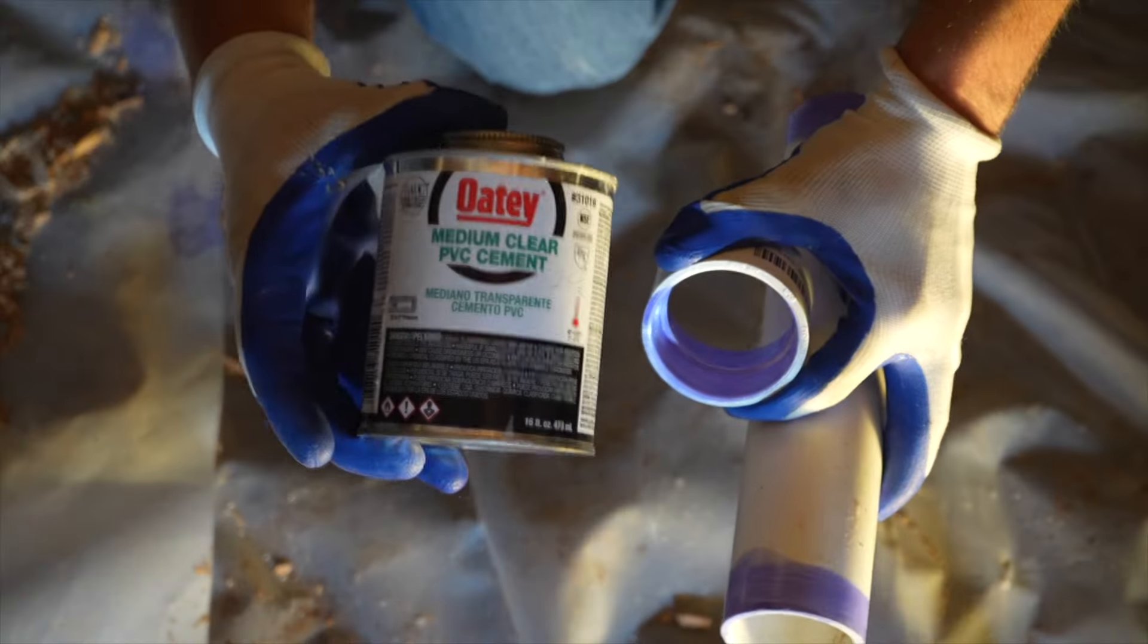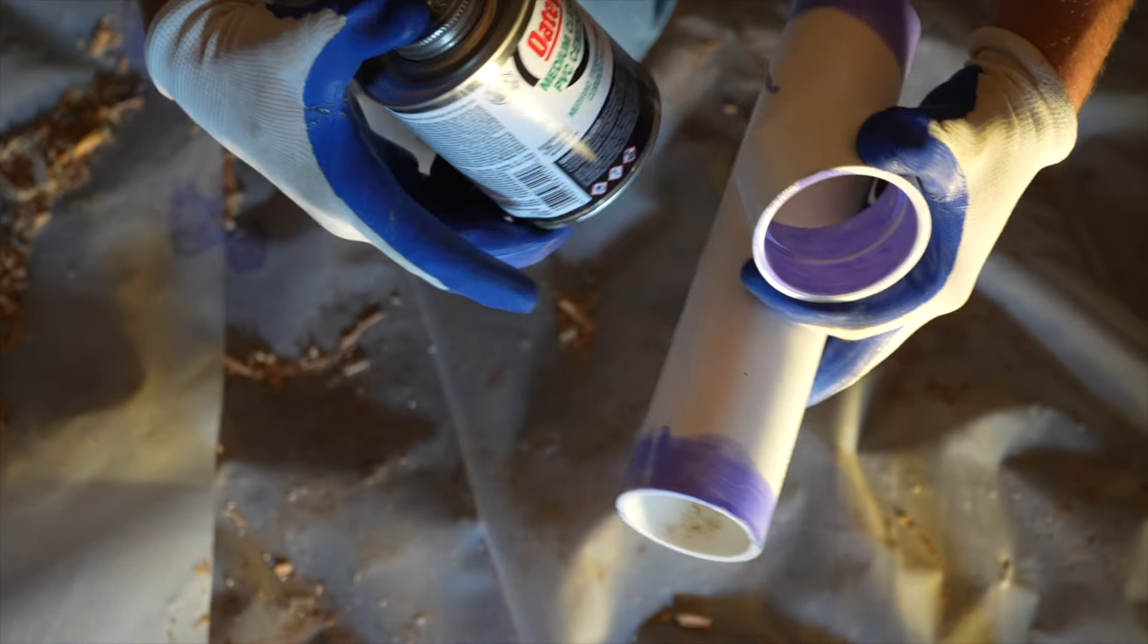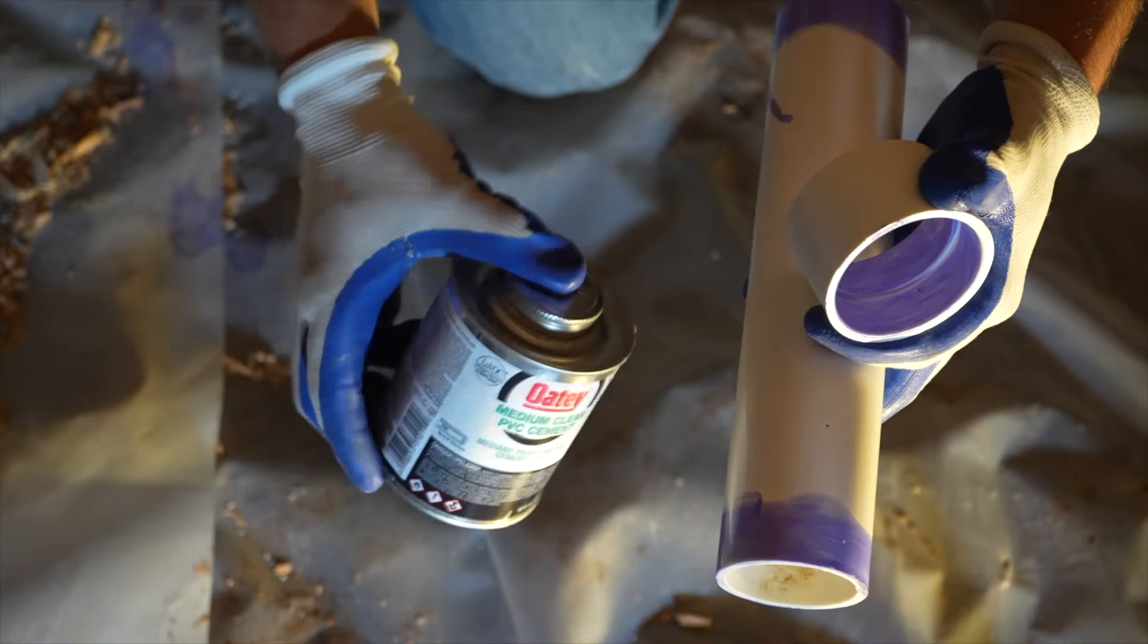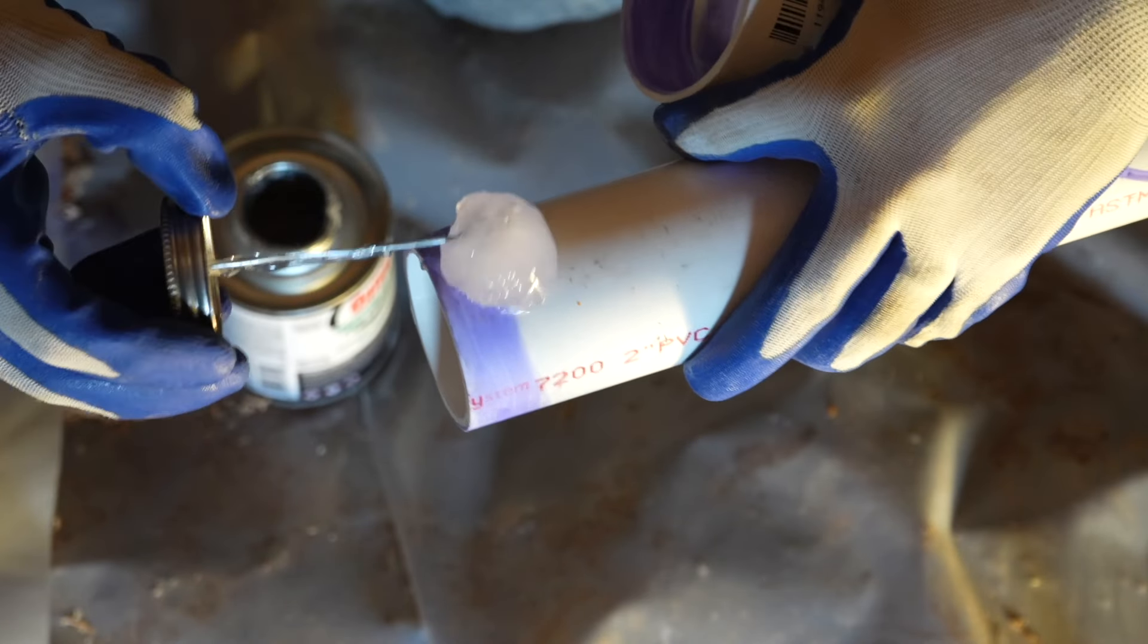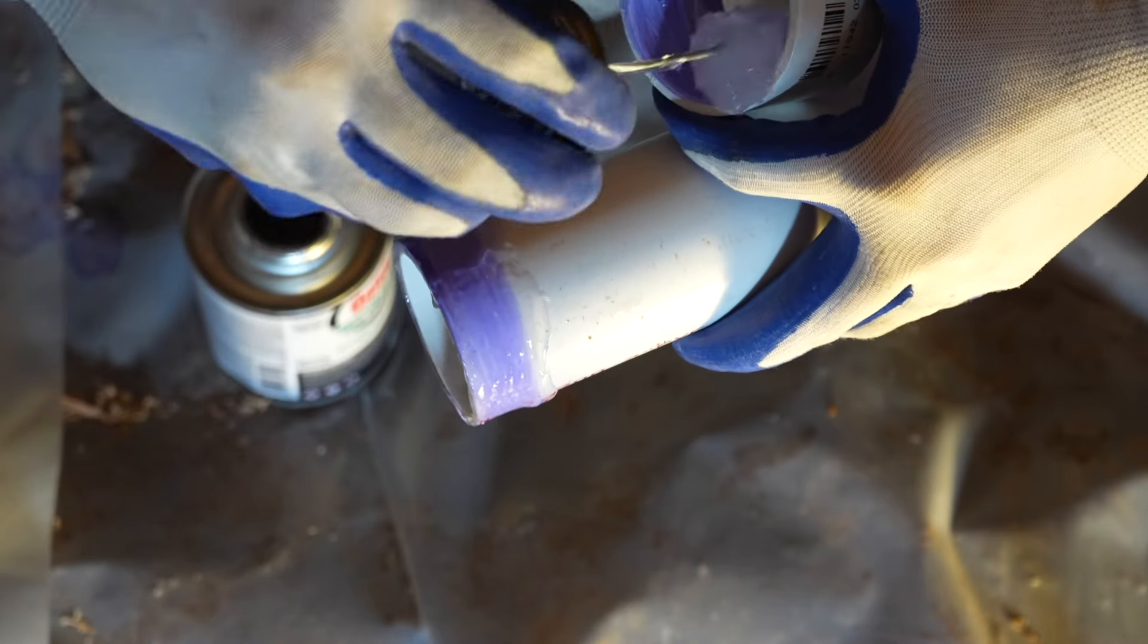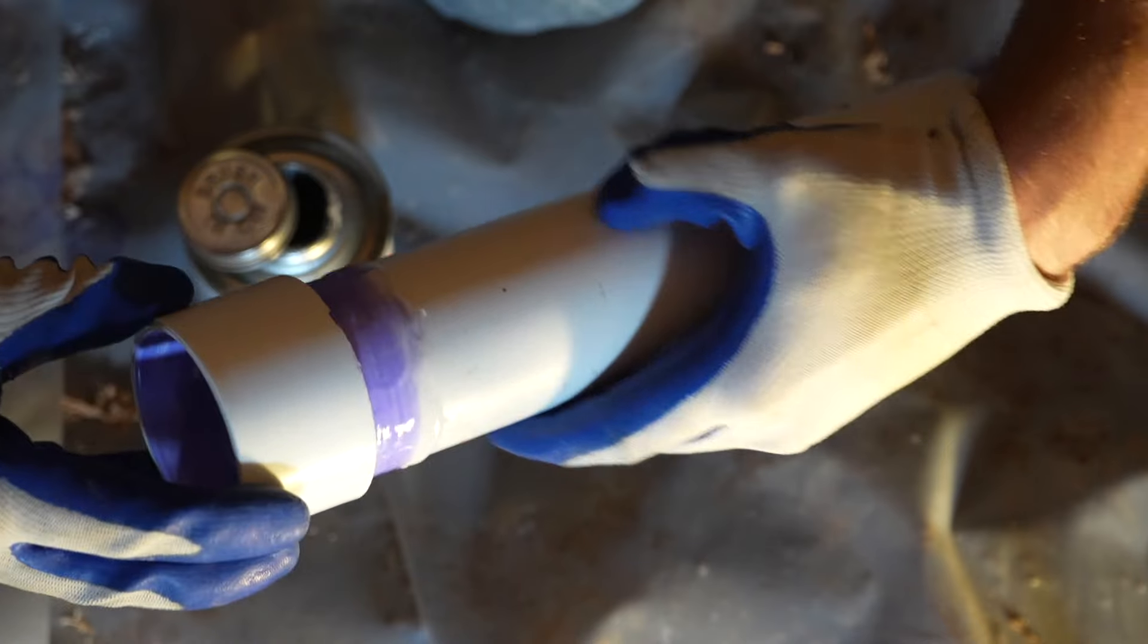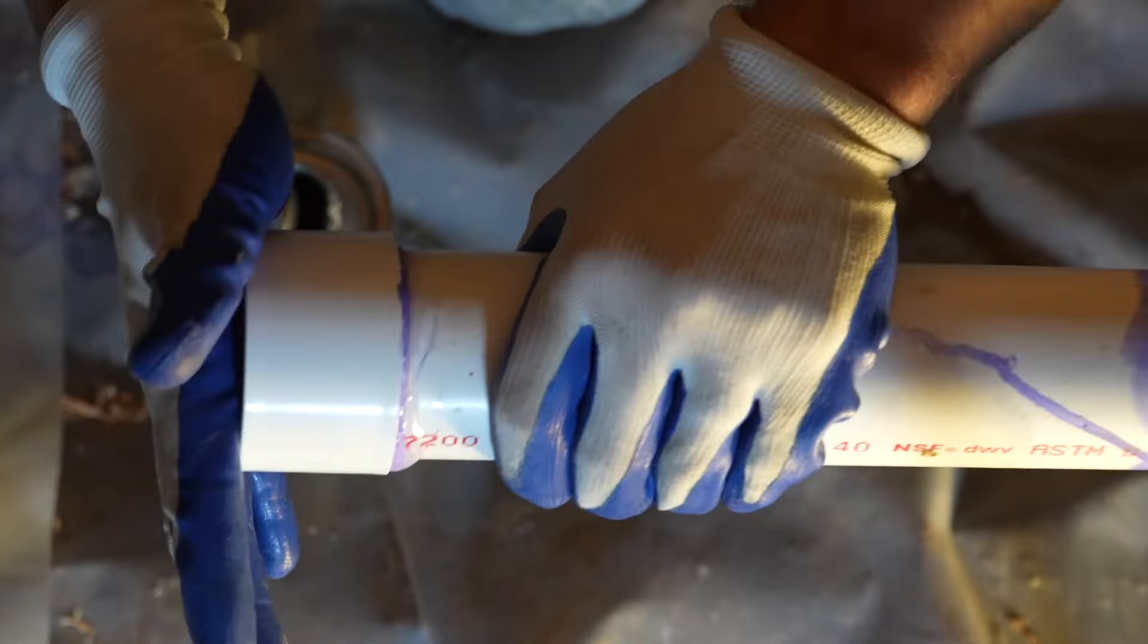I'm going to take the cement and glue the coupling to the two inch pipe. Always give my cement just a good little shake, and also do this with my primer as well. Now I'm just going to take a liberal amount of cement and go right around that joint and inside of the coupling as well. Then I'm just going to push it on and twist at the same time.